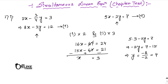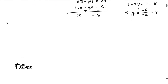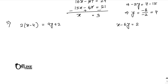Now problem number 2: 2(x minus 4) equals 9y plus 2. Expanding, we get 2x minus 8 equals 9y plus 2, which simplifies so that x equals 2 plus 6y. We can solve by substitution.